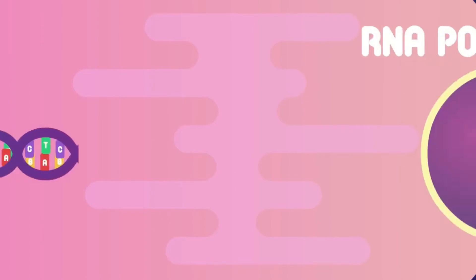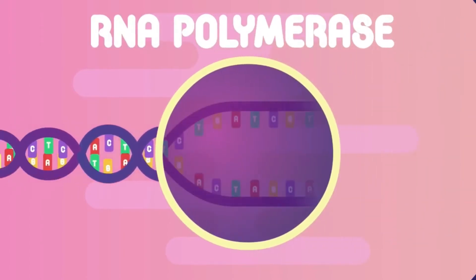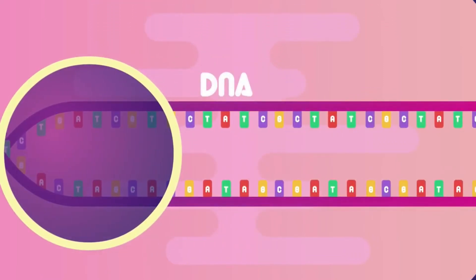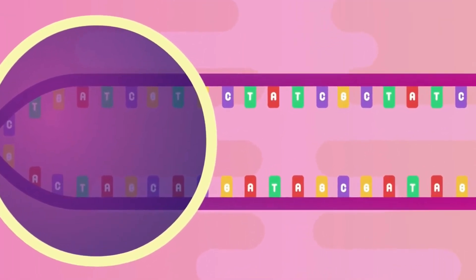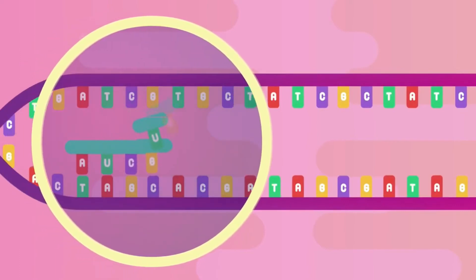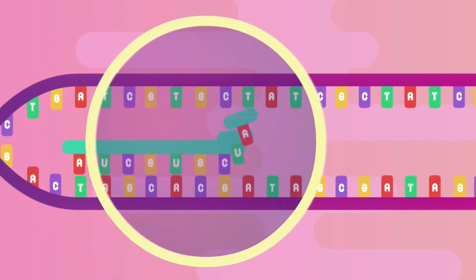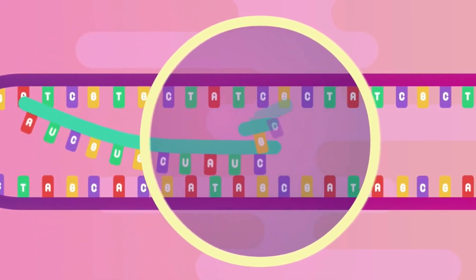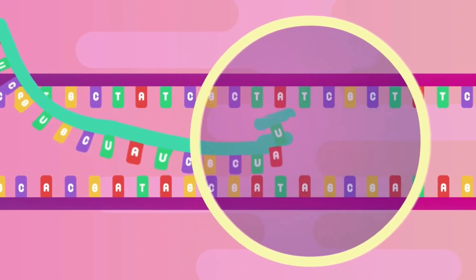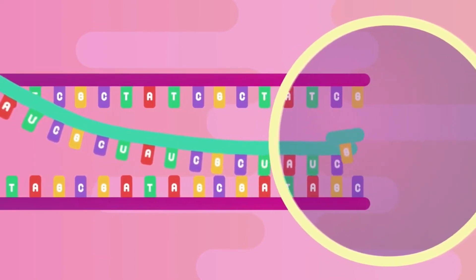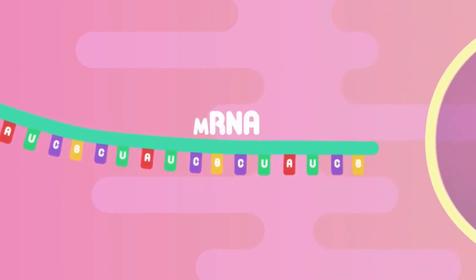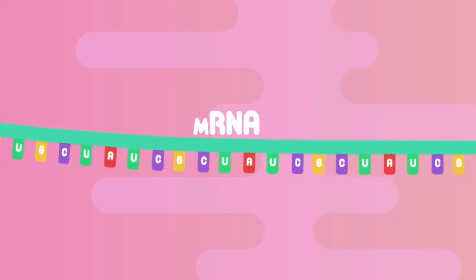In the nucleus, the enzyme RNA polymerase unwinds and unzips the two strands of DNA that contain the protein-making gene. Only one of these strands is going to be replicated. Complementary RNA nucleotides base pair with the chosen strand. RNA polymerase also then binds the RNA nucleotides together, making a new RNA strand. This is called messenger RNA, or mRNA.